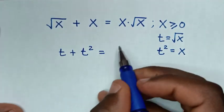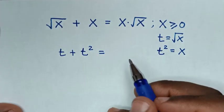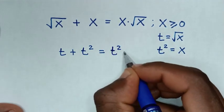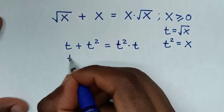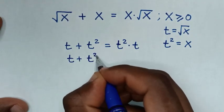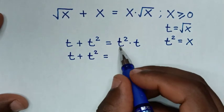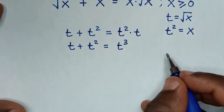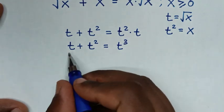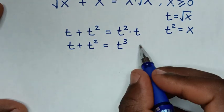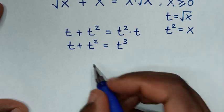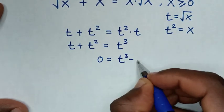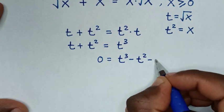The right-hand side, x times square root of x, becomes t squared times t, which is t cubed. So the equation is: t plus t squared equals t cubed. Rearranging, we get 0 equals t cubed minus t squared minus t.